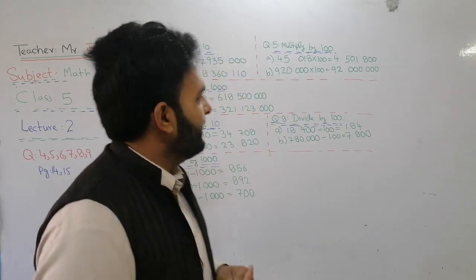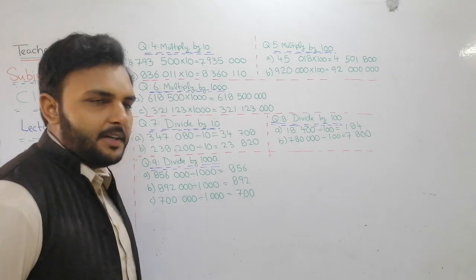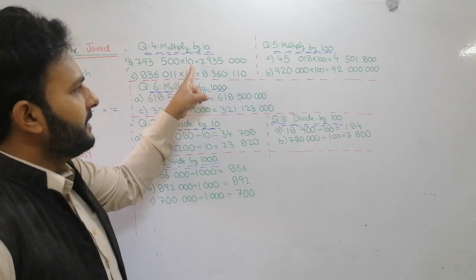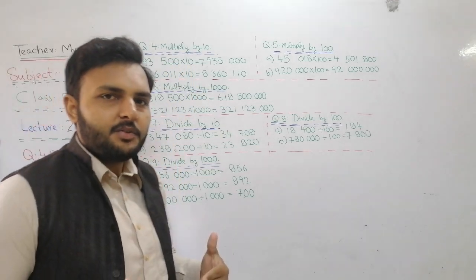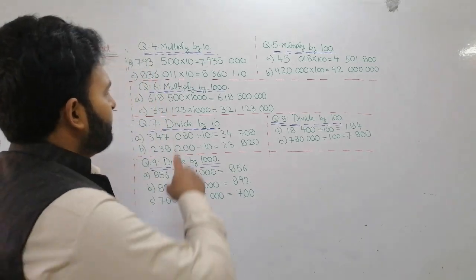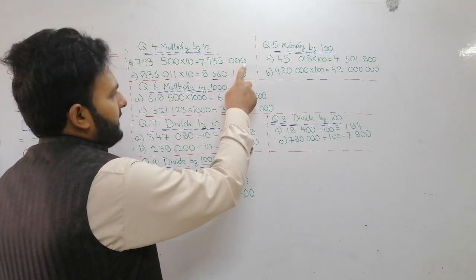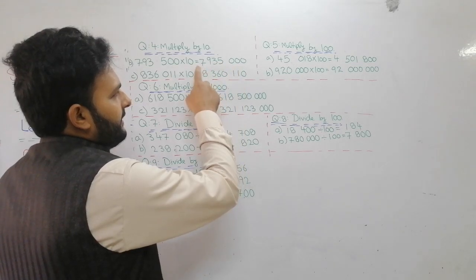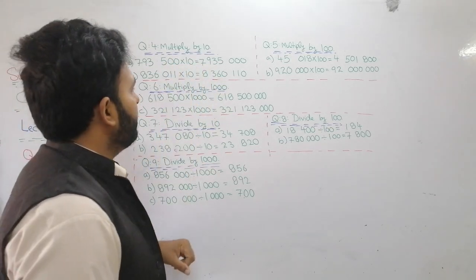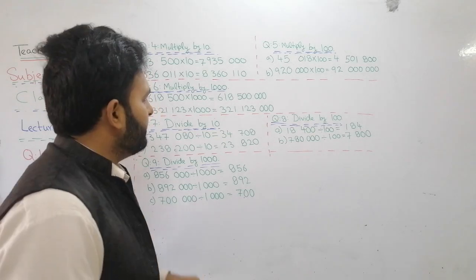Question number 4 — multiply by 10. For example, 7, 9, 3, 5, double zero. We have to multiply by 10. In 10 there is only one zero, so we write one zero on the right side. The number of zeros was 2, so now it becomes 3. You write in standard form — combine three digits and add a dash, with the remaining digits at the left.